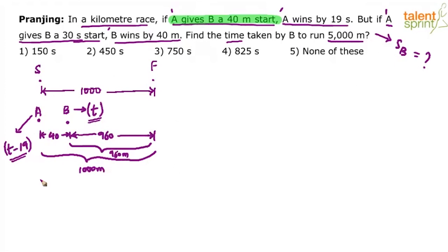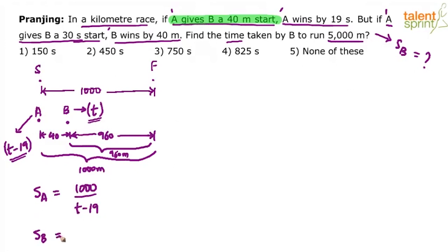From this, the speed of A equals 1000 divided by (T minus 19), since A covered 1000 meters in T minus 19 seconds. The speed of B equals 960 divided by T, since B covered 960 meters in T seconds.